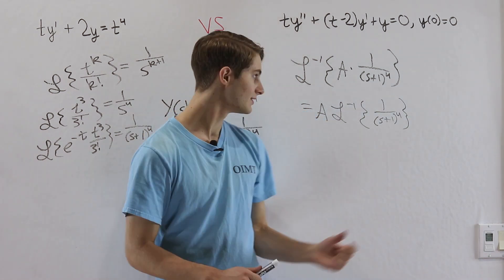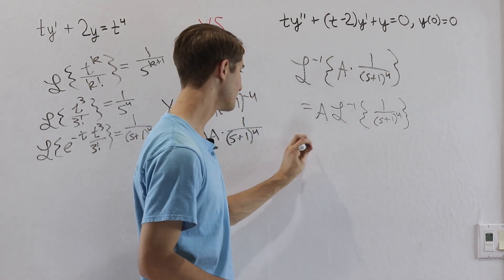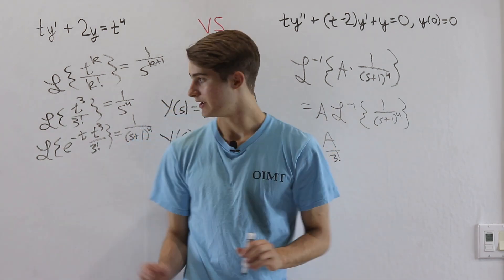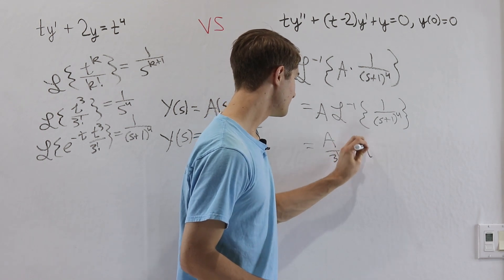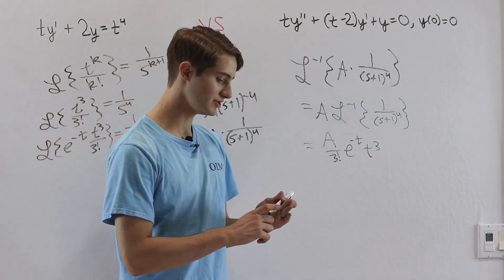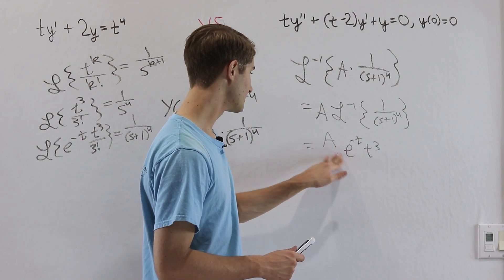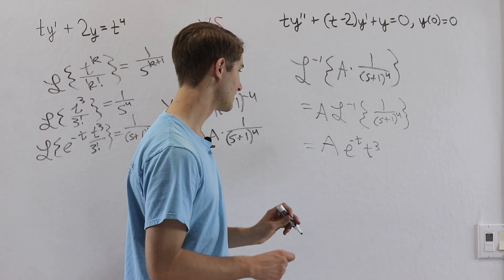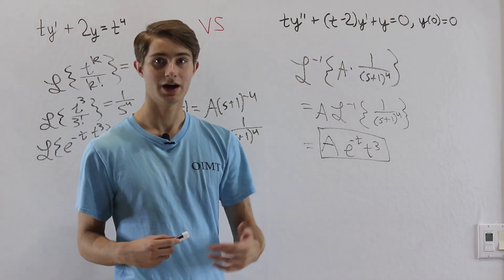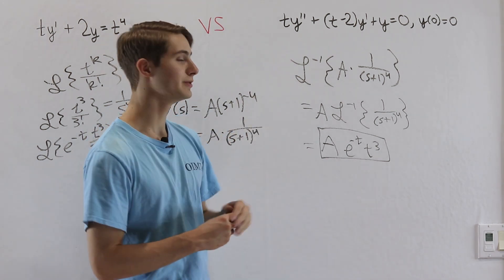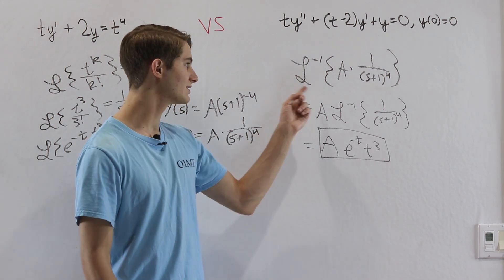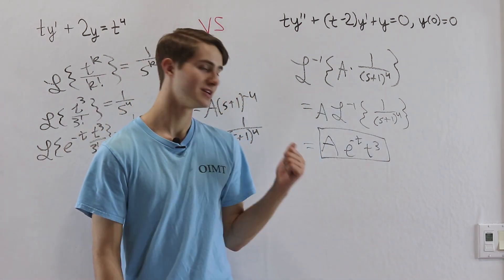Writing the final answer, we have A times 3 factorial times e to the negative t times t cubed. Since A over 3 factorial is still just an arbitrary constant, we absorb it and write the solution as y equals A times e to the negative t times t cubed. That is the power of Laplace transforms: they can handle differential equations with non-constant coefficients by converting them into algebraic problems solvable with our identities.